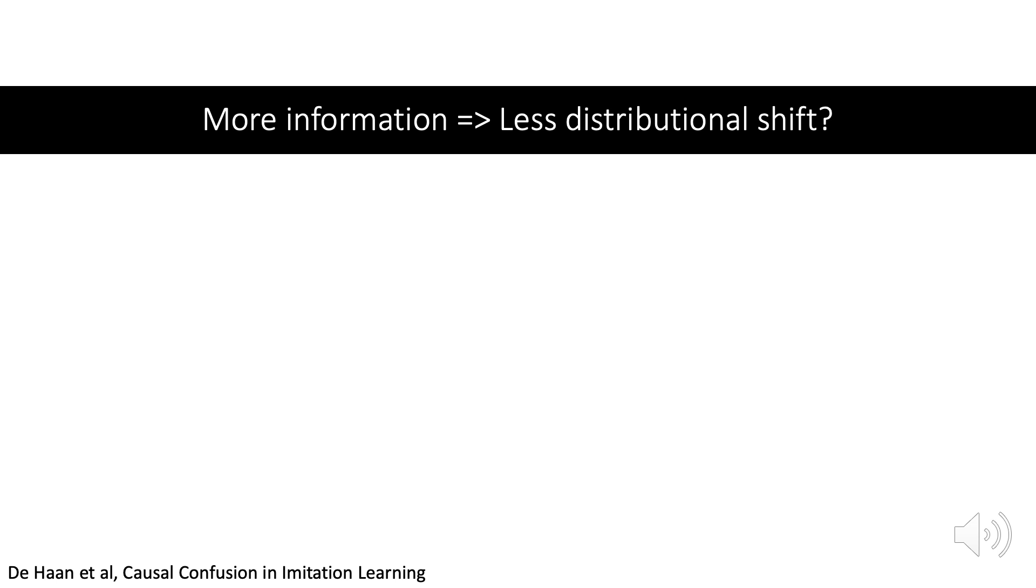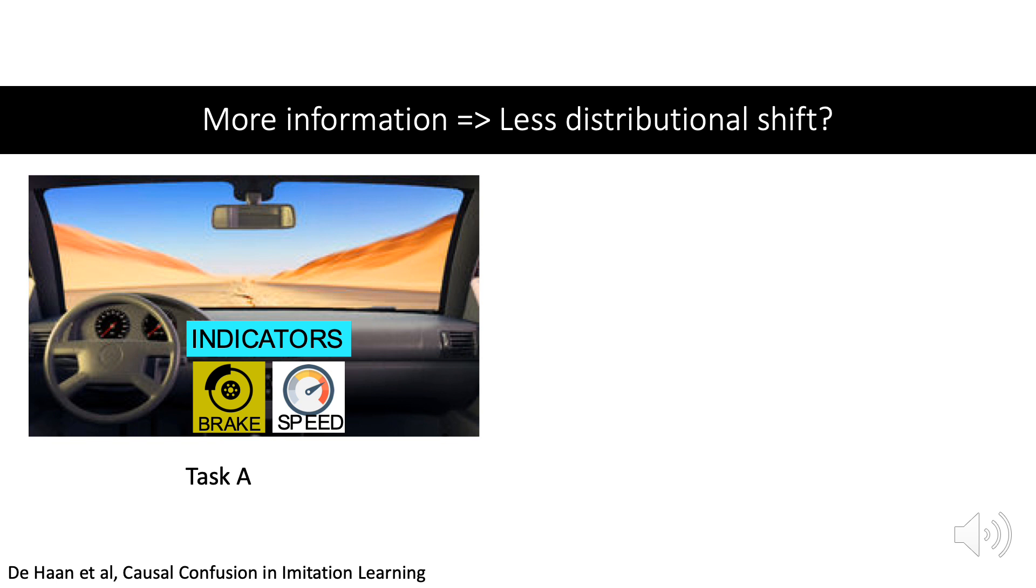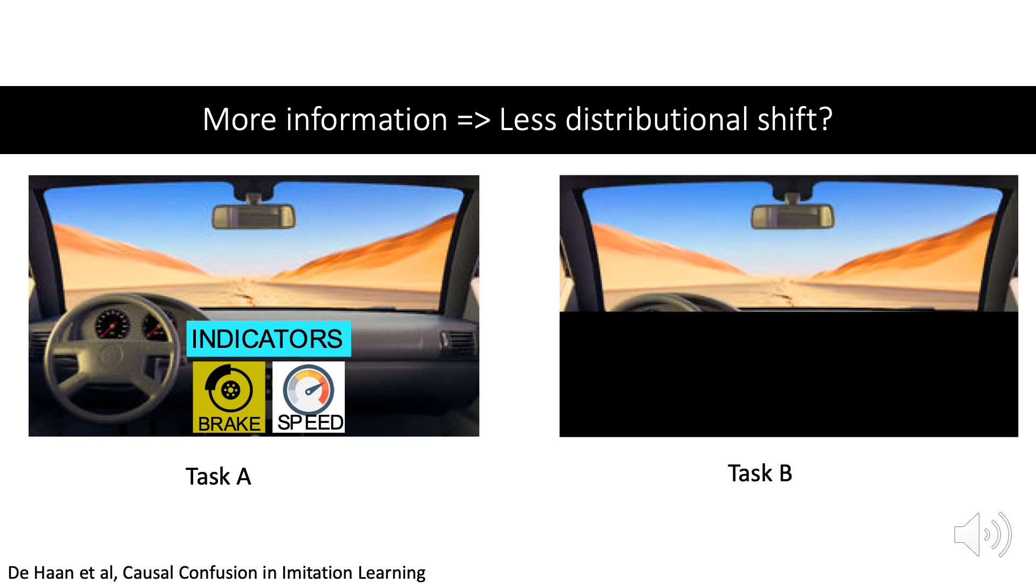Consider a motivating example. We perform behavioral cloning to learn to drive a car in two scenarios. Here we see task A. The input is an image of the windshield and the dashboard, with an indicator that says whether we are currently braking. In task B on the right, the dashboard is blacked out. Both cloned policies achieve low training losses, but what happens when we test these on the road?